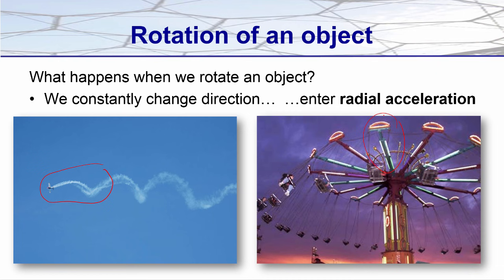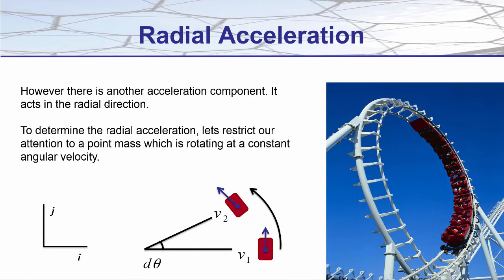What happens when we rotate an object? We are constantly changing direction. Because we're constantly changing direction, and velocity is a vector, that means we must be changing our velocity — at least the direction of that velocity vector. So we need to have an acceleration, because an acceleration is a change in velocity, and that acceleration is a radial acceleration. We're going to define where radial acceleration comes from.